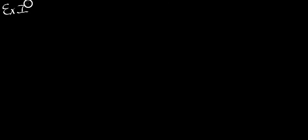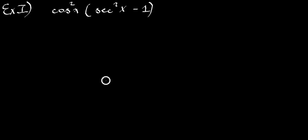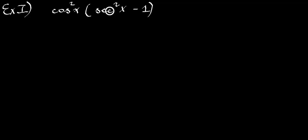Example one: cosine x squared multiplied by secant x squared minus 1. When I see something squared minus 1, or 1 minus something squared, I know I can simplify that — I can reduce it to something else. I know I need to think of my identities and I will be able to make it easier for myself.